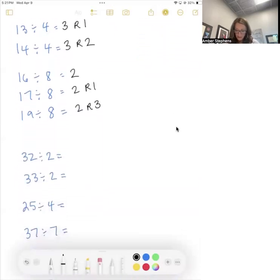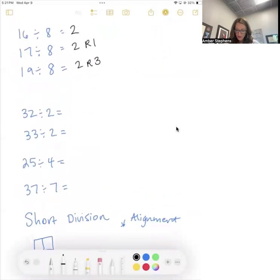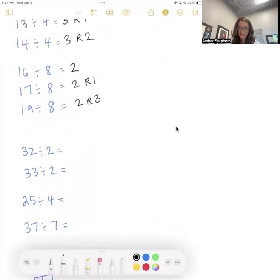And we will keep on going right here. 32 divided by 2, that one's going to be just memorized: 16. And then with 33, we know that there's one more. There's a remainder of one.